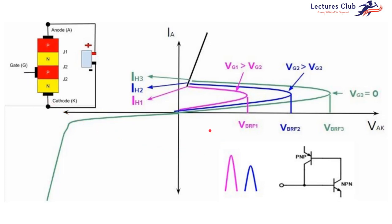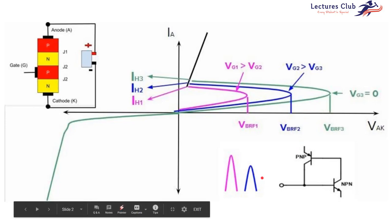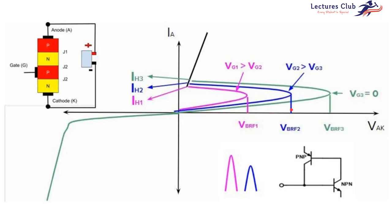When we apply the pulse at the gate, the SCR turns on and goes from the forward blocking region to the forward conduction region. Here in the graph, the forward blocking region starts from 0 to VBRF1, VBRF2, or VBRF3. If we don't apply a pulse on the gate, the forward blocking region starts from 0 and ends at VBRF3. If we apply a small pulse, the forward blocking region will be from 0 to VBRF2. And if we apply a more positive pulse at the gate, the forward blocking region is from 0 to VBRF1.